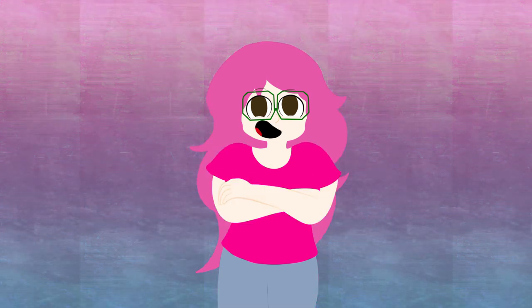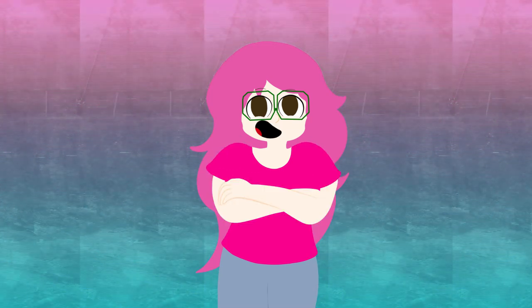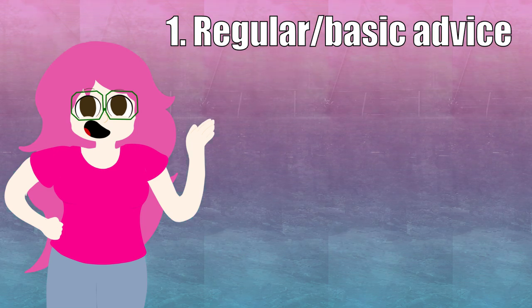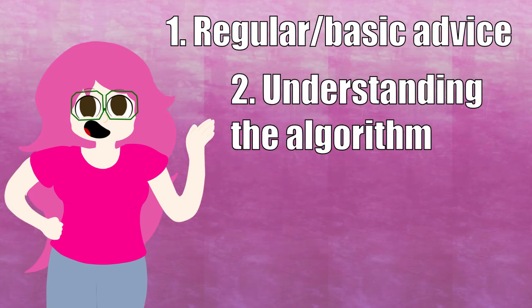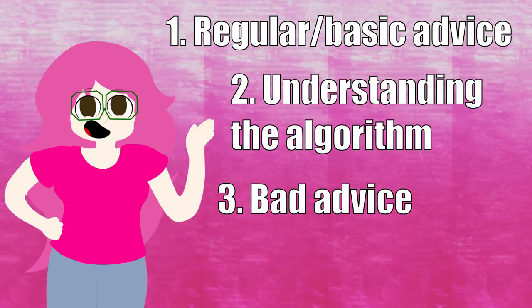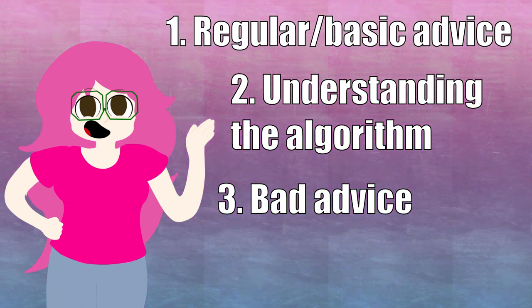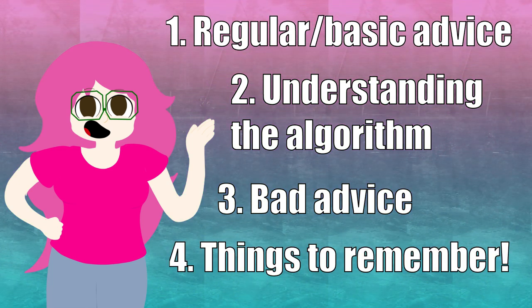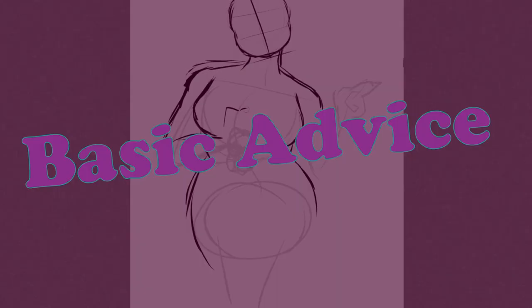This video is going to be split up into four sections. Number one is regular self-advertising. Number two is understanding and using the algorithm. Number three is bad advice you shouldn't listen to. And number four is things you should remember when taking all this advice into account. So let's get started!